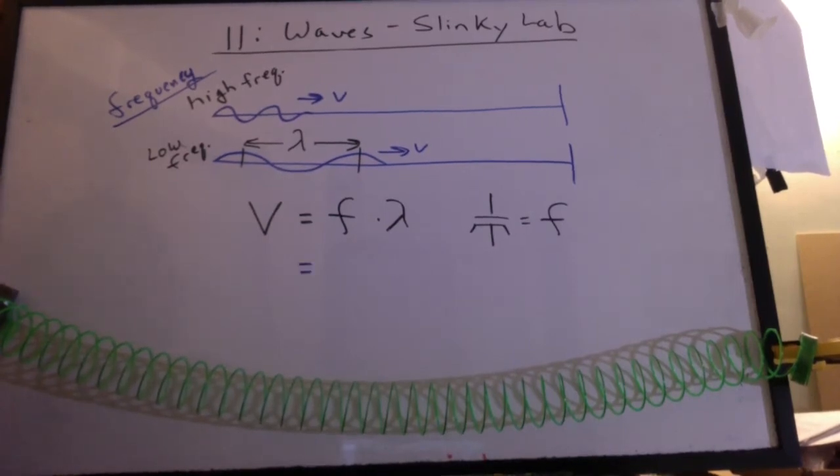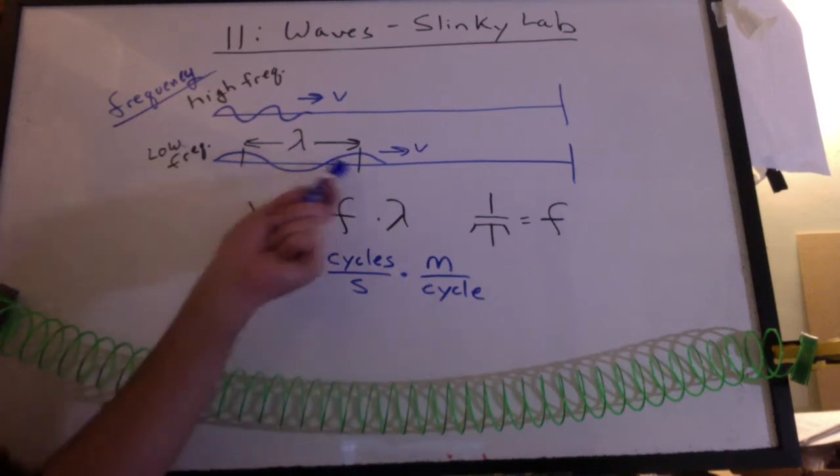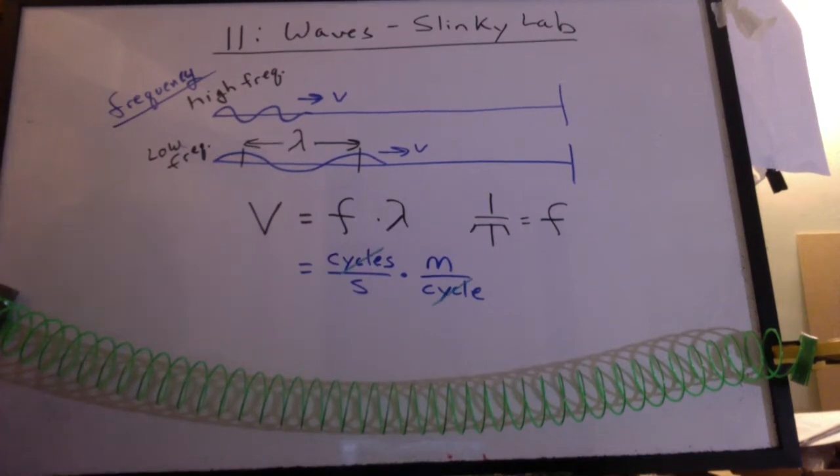Let's talk units. We can say frequency is cycles per second. I like to think of wavelength as meters per cycle, because it is one cycle that we're measuring the length of. The cycles cancel out, and we're left with meters per second. Very often, you don't even see the word cycles in the equation. It's just one over seconds for frequency times meters for wavelength.